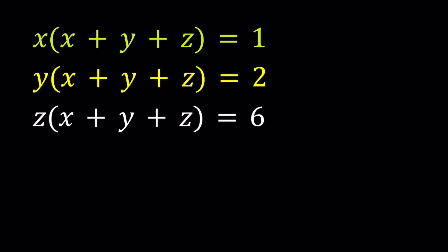Hello everyone. In this video, we're going to be solving a polynomial system. We have x times the quantity x plus y plus z equals 1, y times the quantity x plus y plus z equals 2, and z times the quantity x plus y plus z equals 6. And we're going to be solving for x, y, and z.